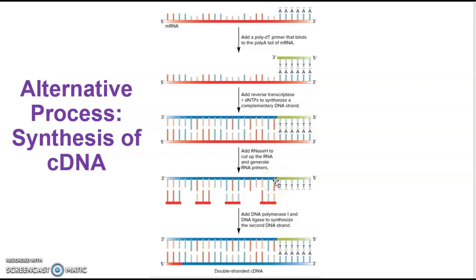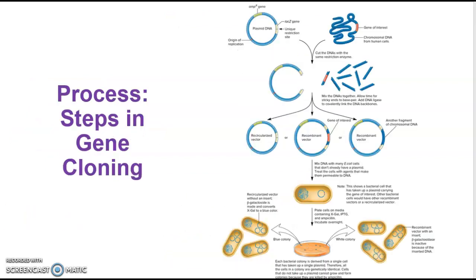And then DNA polymerase I comes in, removes these which it sees as being primers, and then fills in the DNA, and then ligase comes along. And so now we're left with a double-stranded cDNA molecule that we can then use back to the steps of cloning, where we can insert it.